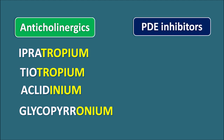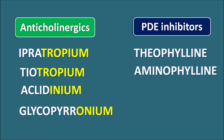The third category is phosphodiesterase inhibitors (PDE inhibitors). These mainly include theophylline and its derivative aminophylline. Theophylline can be used as a bronchodilator but is not very specific — it can produce actions on the heart and CNS, causing tachycardia and convulsions as side effects. It also has a narrow therapeutic window and can cause metabolic enzyme inhibition leading to drug interactions. Because of these limitations, theophylline is nowadays less preferred as a bronchodilator compared to salbutamol.